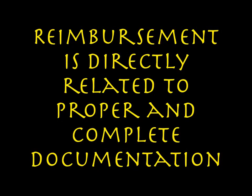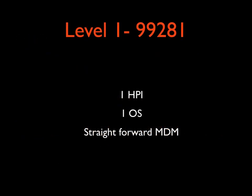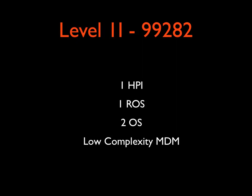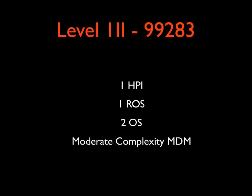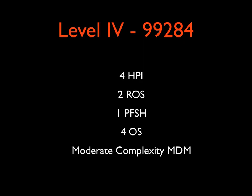Reimbursement is directly related to proper and complete documentation. The minimum documentation requirements for emergency department EM services are as follows: Level 1 (99281) requires 1 HPI, 1 review of systems, and 2 physical exam findings, with low-complexity medical decision making. Level 3 (99283) requires 1 HPI, 1 review of systems, 2 physical exam findings, and moderate-complexity medical decision making. Level 4 (99284) requires 4 HPI findings, 2 review of systems, 1 past family social history, 4 exam findings, and moderate-complexity medical decision making.